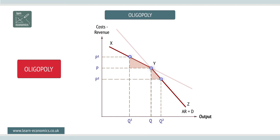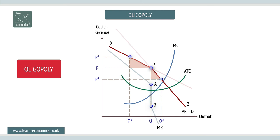Profit maximization occurs where MC cuts MR, which is the vertical section between A and B. The level of profit depends upon the position of the ATC curve.